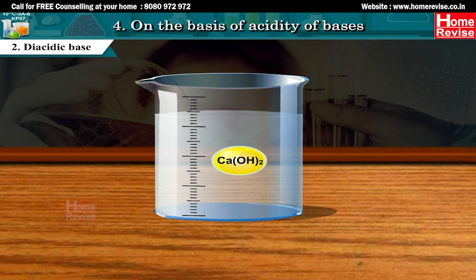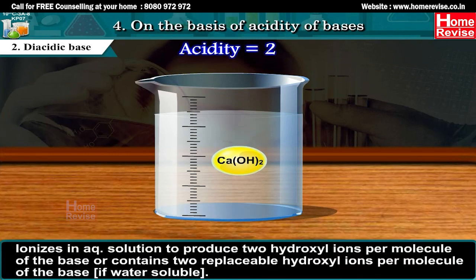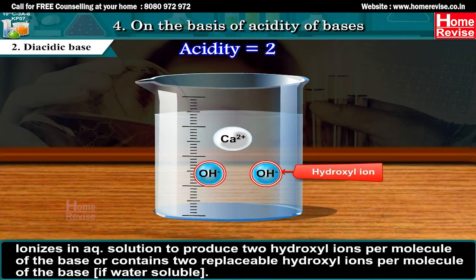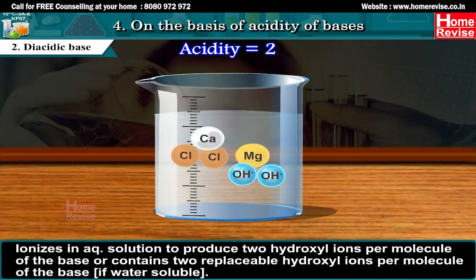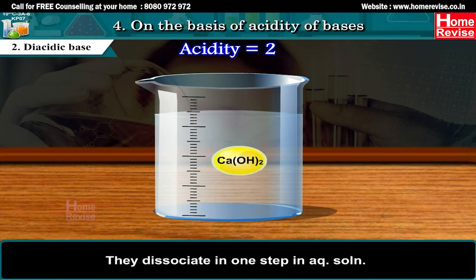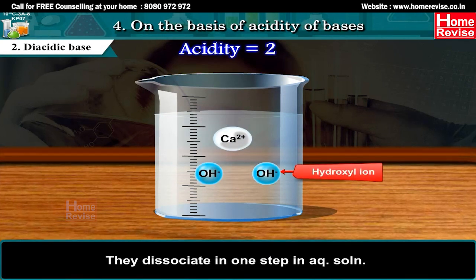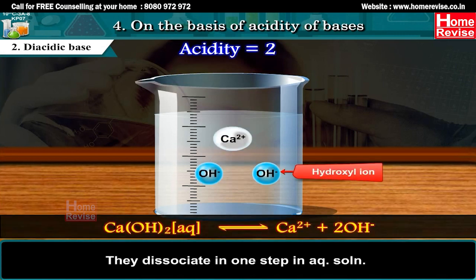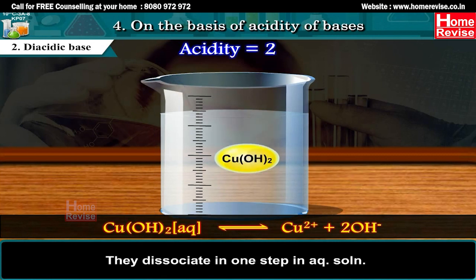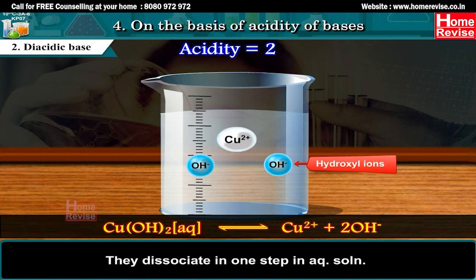2. Diacidic base (acidity = 2): ionizes in aqueous solution to produce two hydroxyl ions per molecule of the base. Dissociates in one step. Ca(OH)2(aq) reversibly gives Ca2+ plus 2OH-.